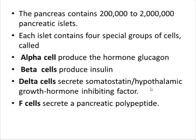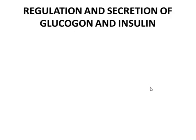To summarize: the alpha cell produces glucagon, the beta cell produces insulin, the delta cells secrete somatostatin or the hypothalamic growth hormone inhibiting factor, and the F cells secrete pancreatic polypeptide, which inhibits somatostatin secretion, gallbladder contraction, and pancreatic digestive enzyme secretion. Now we will discuss the regulation and secretion of glucagon and insulin.